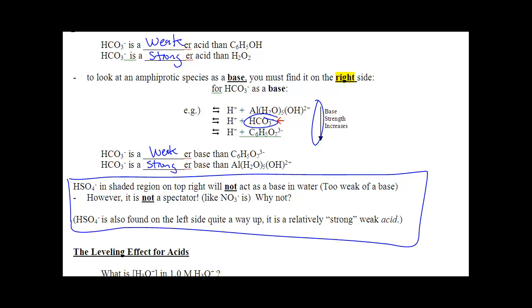You're going to notice that H2SO4 along the top has a single arrow to make HSO4-. HSO4- is also found a little way down the left-hand side. So it is a weak acid. HSO4- is not an amphiprotic ion, and it's also not a spectator because it is called a weak acid. I'll point that out to you again tomorrow.